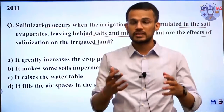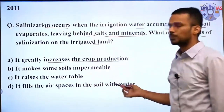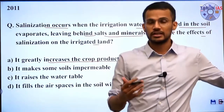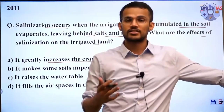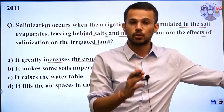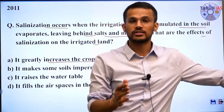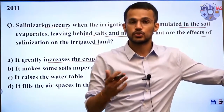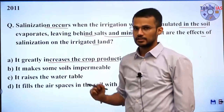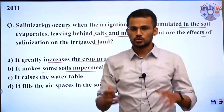The options are: A) it greatly increases crop production. This is not possible — an increase in crop production on salinized land is not possible because salinization is the accumulation of salts like sodium and chlorine, which are not nutrients useful for crop growth. Hence the first statement is incorrect.